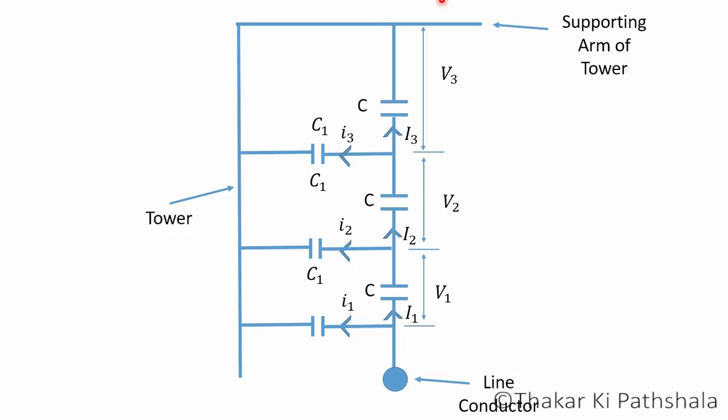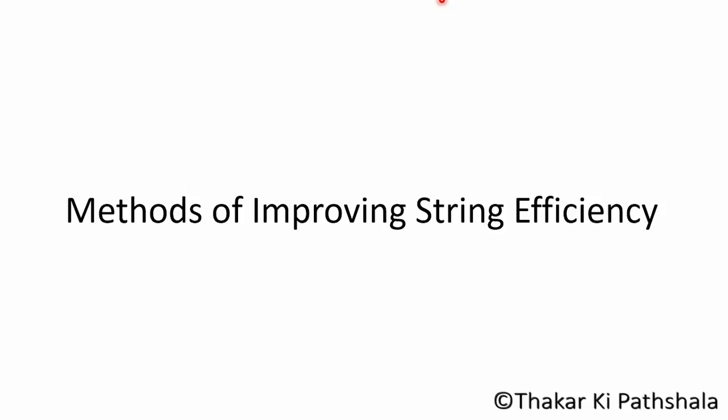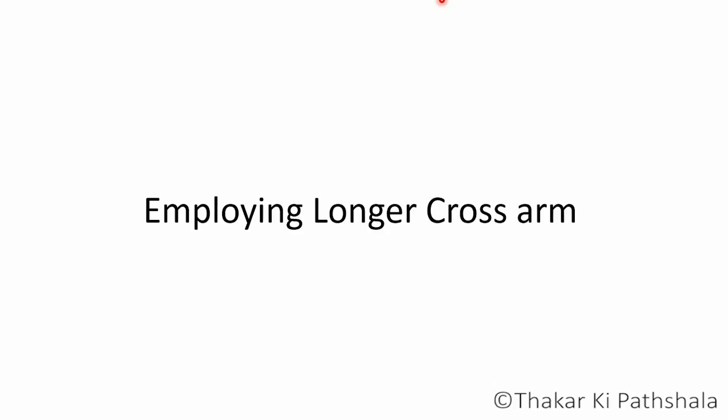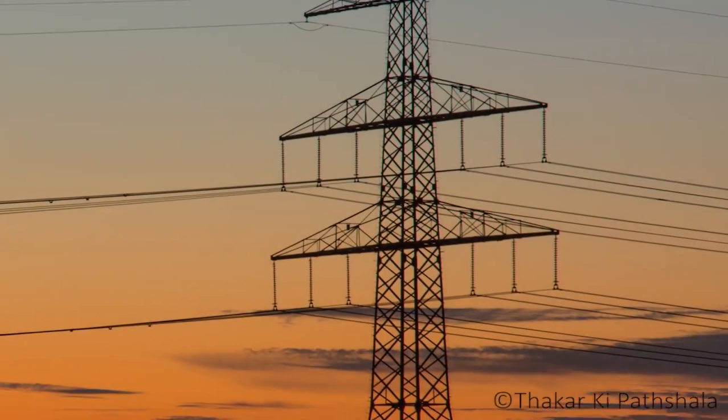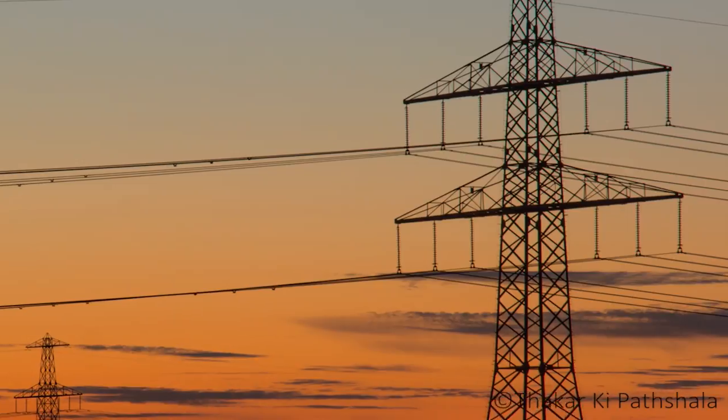So shunt capacitance has done its damage. Now it is up to us to compensate for this, and as engineers, we can find one way or another to solve these problems. There are three methods by which we can actually improve string efficiency. The first method is by employing a longer cross arm. Due to shunt capacitance, the charging currents are flowing to the ground, and as we go upward, the value of charging current through each unit decreases.